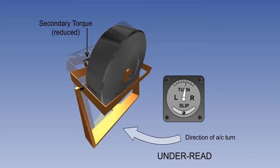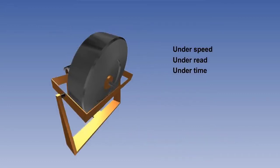If rigidity reduces, then the secondary torque from the spring tension must also reduce, in order to maintain the same precession. If the instrument is under-reading, what would appear to be the correct indication on the instrument face would, in fact, result from the aircraft turning faster than the indicated rate of turn, and the aircraft will complete the turn sooner. We can say, therefore, that an under-speed will cause an under-read and an under-time turn.